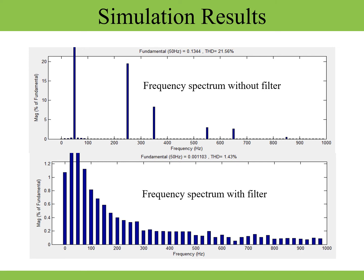The frequency spectrum is analyzed before and after introducing the active power filter. As we can see in the upper figure, the total harmonic distortion is about 21.56%, while in the lower figure the total harmonic distortion is 1.4%. The filter has significantly reduced the harmonics, as shown in the two figures.